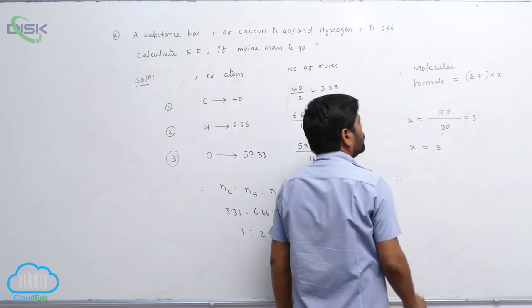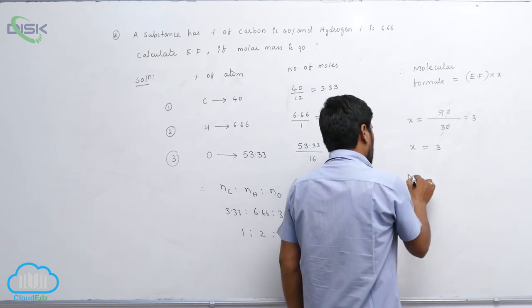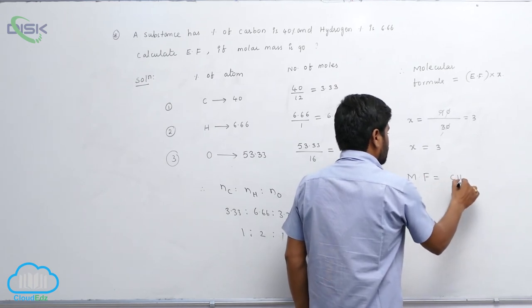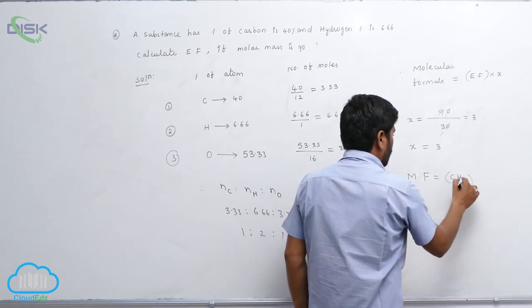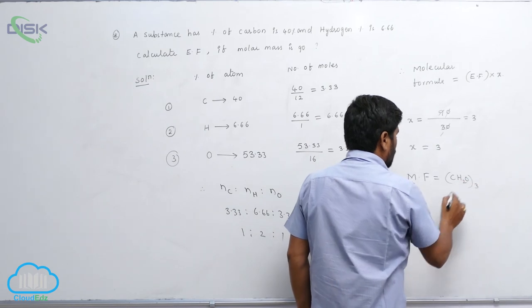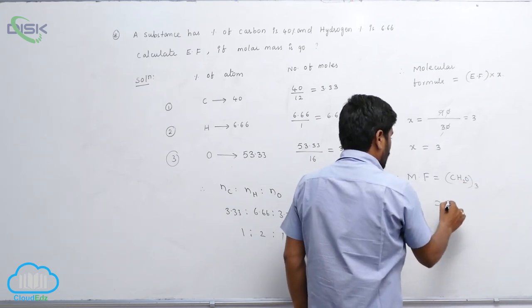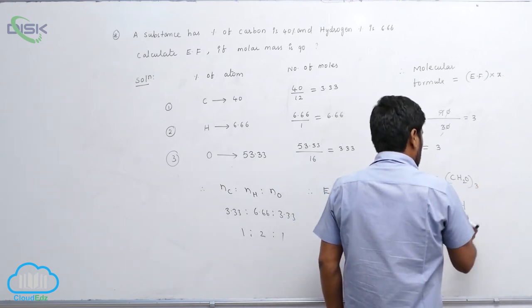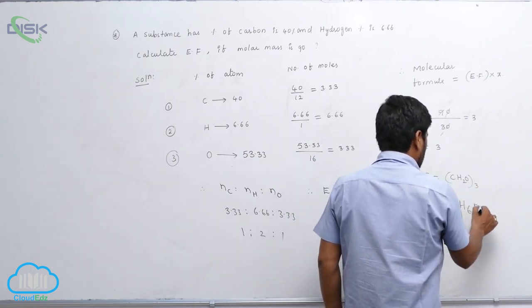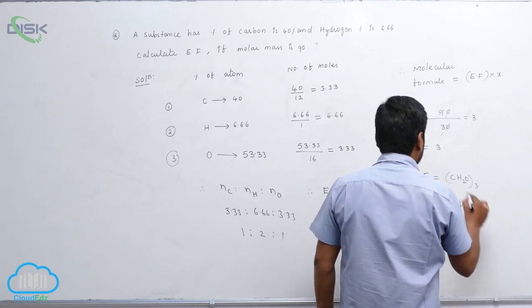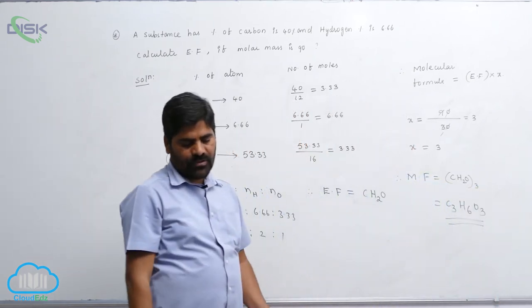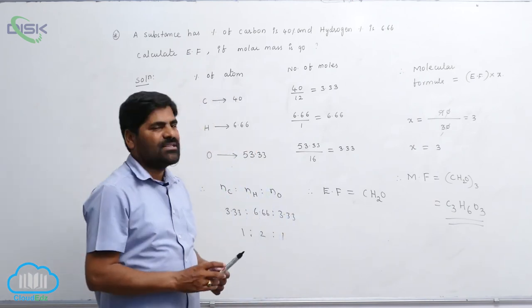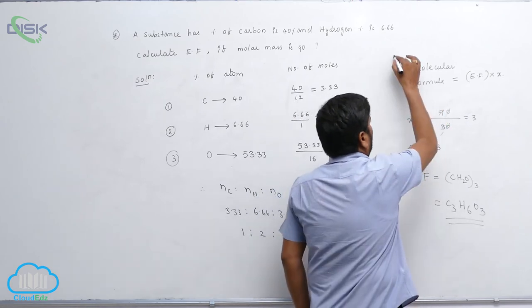Therefore, the molecular formula equals C₃H₆O₃. This is the molecular formula. So like this, we can calculate the empirical formula as well as the molecular formula.